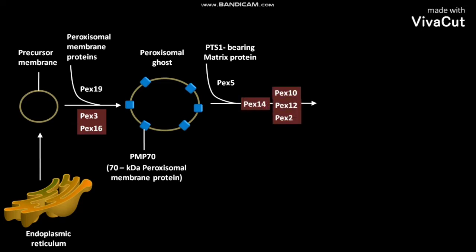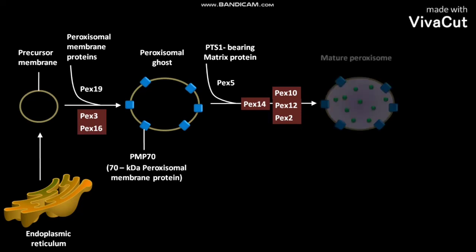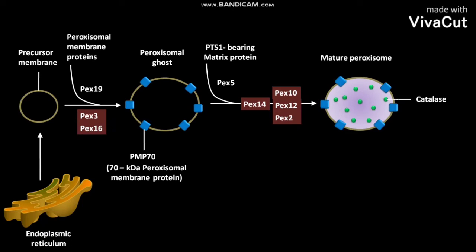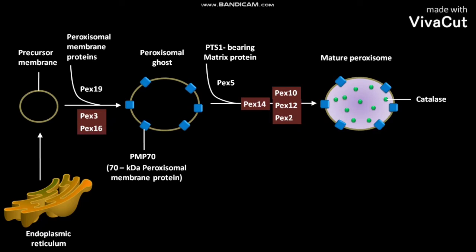PEX-12 and PEX-2, forming a mature peroxisome containing catalase. PEX-5 binds the PTS-1 sequence in the PTS-1 bearing matrix protein.